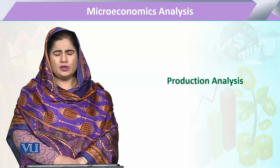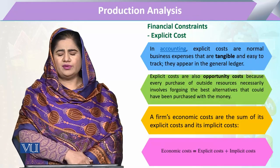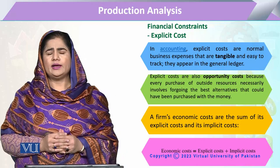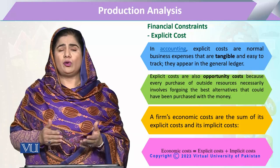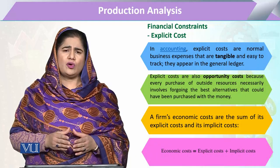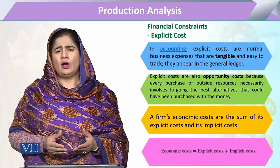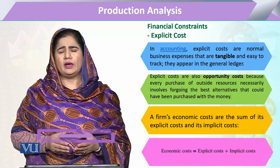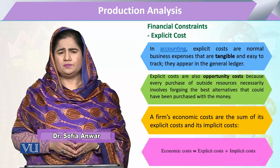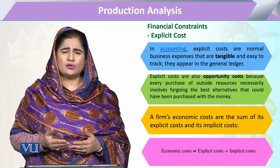We are going to study today the topic of explicit cost under the financial constraint. As the word explicit makes clear, it pertains to costs that are quite obvious, quite clear, or we can say tangible. Those costs that we are going to enter in our cost accounting, in our ledgers, and for which we are going to pay for inputs, will be called explicit costs. This is just opposite to implicit cost.